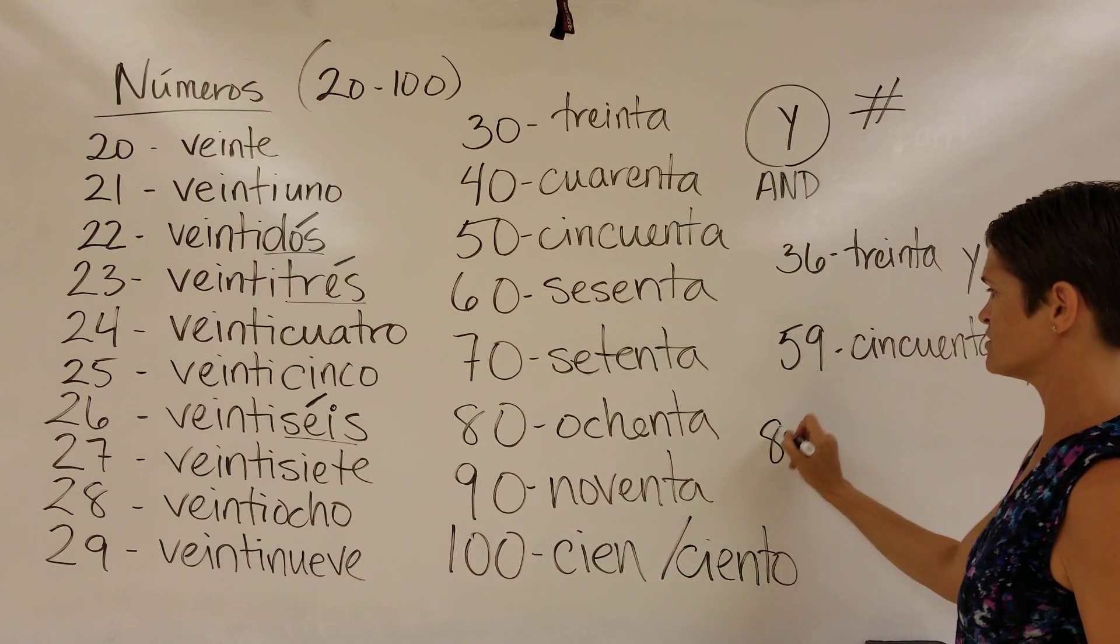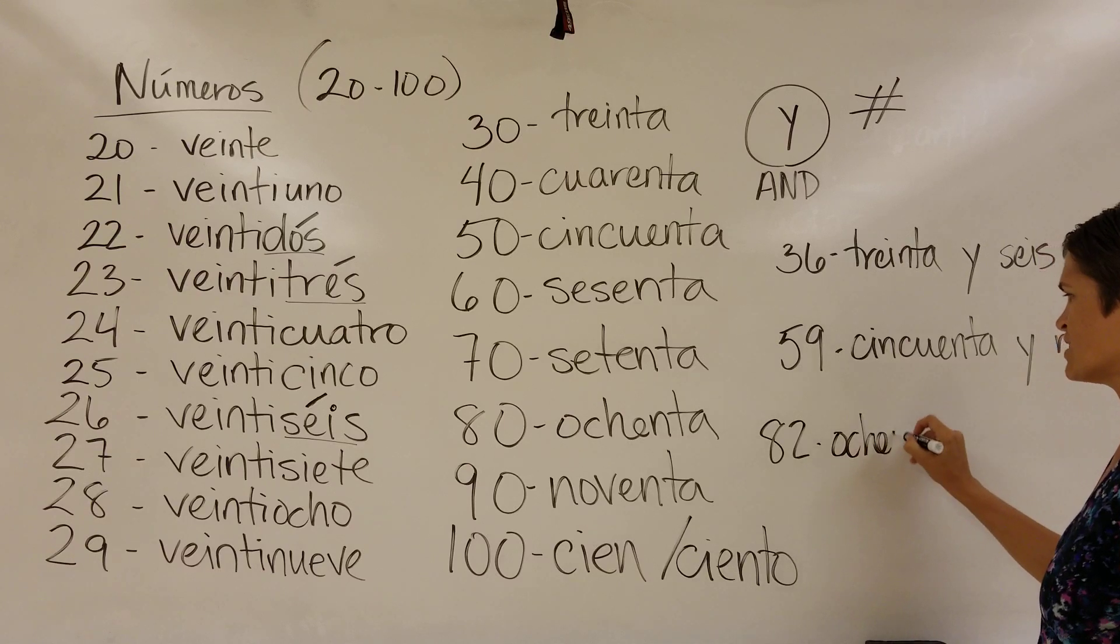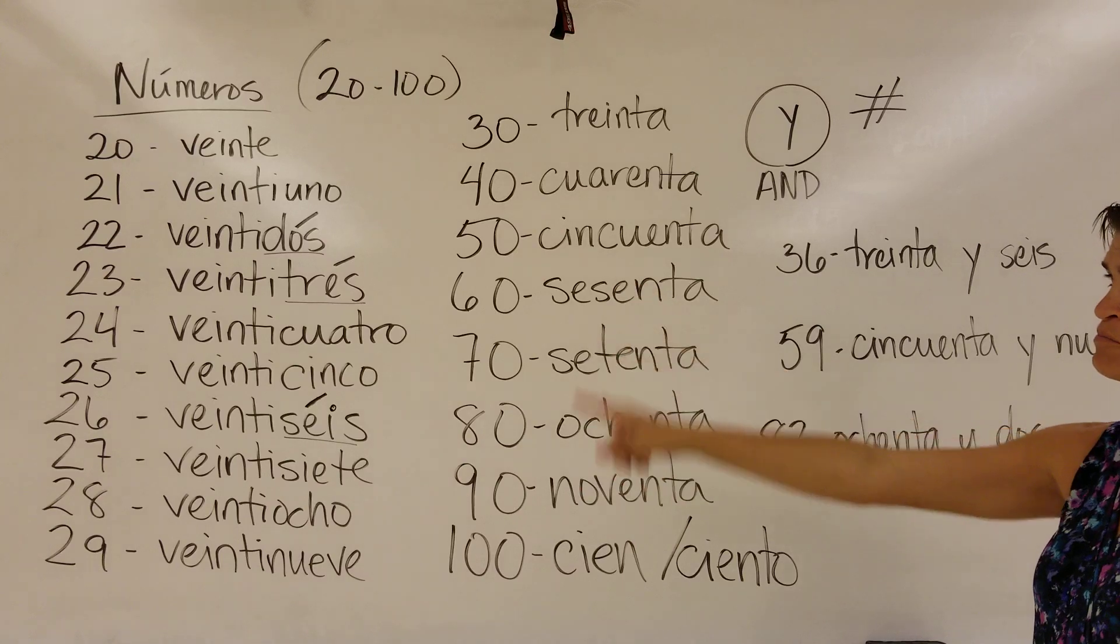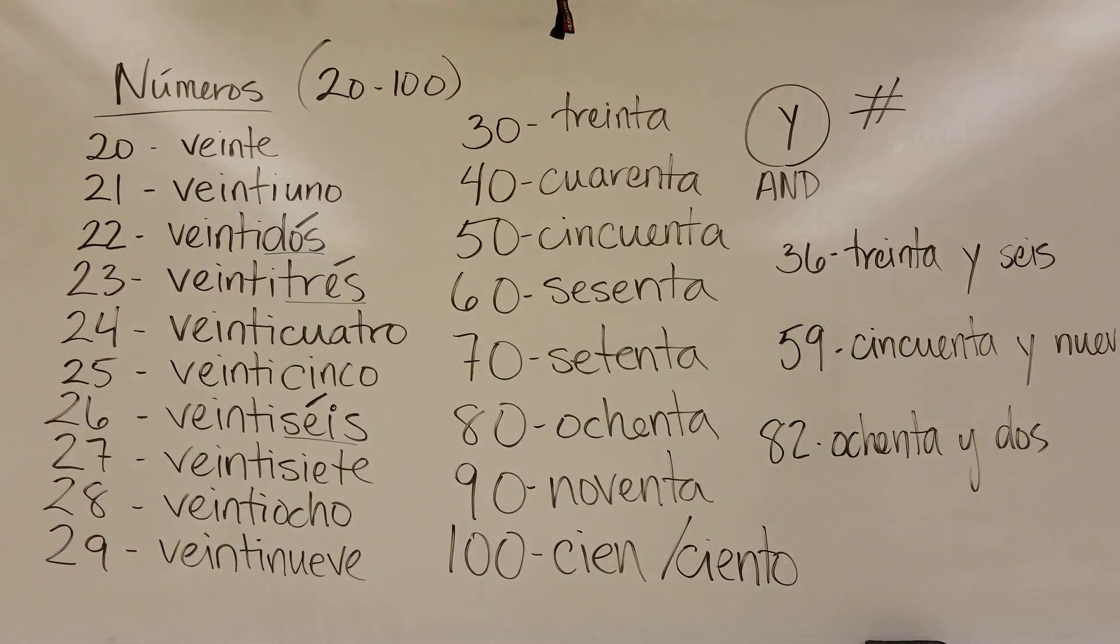Kind of hard to see. So I'll do one more. Let's do 82. Ochenta y dos. Eighty and two. So that's how we do all the other numbers past the 20s. So the 20s we kind of got to memorize since they're squished together like that. They've got some accents. But once you get beyond that, it's just 40 and the number.